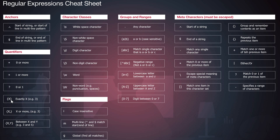If you put a number inside curly brackets, that means match exactly that many times. If you put a number followed by a comma, it means that many times or more. You can also specify a range with x comma y — for example, one comma five will match any digit sequence between one and five occurrences.